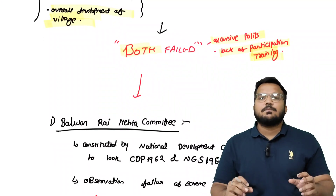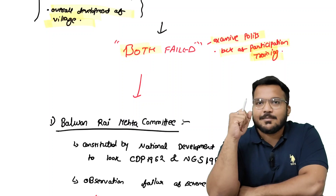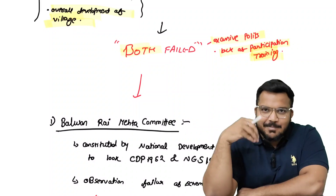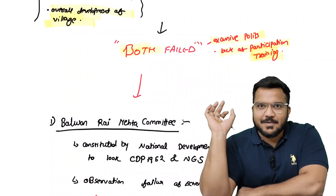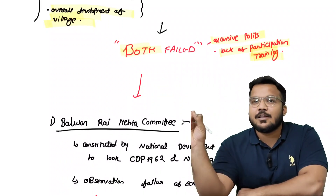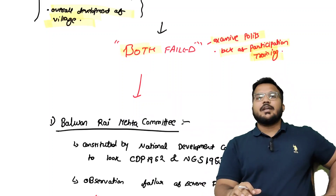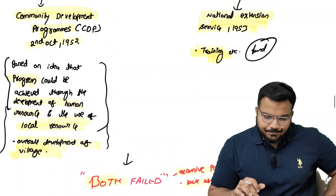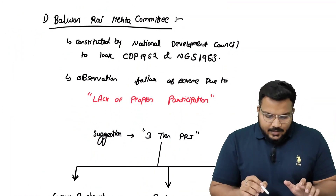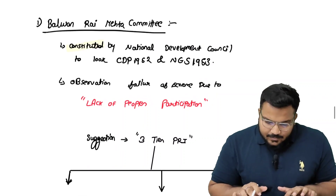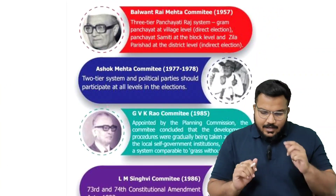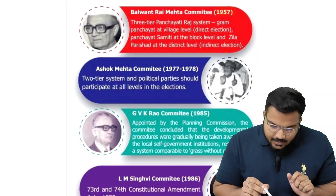जैसे किसी हार के बाद समीक्षा बैठक बुलाई जाती है, वैसे ही यहाँ Balwant Rai Mehta Committee बैठाई जाती है। यह particular committee set की गई on observation of failure of Community Development Programme and National Extension Services — 1957 में। इसके साथ चार और committees हैं जो हम revision में देखेंगे: Ashok Mehta, GVK Rao, और L.M. Singhvi।